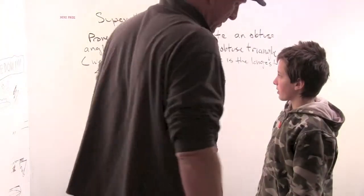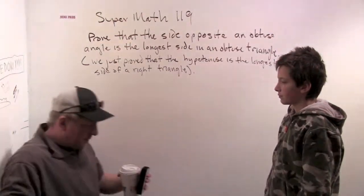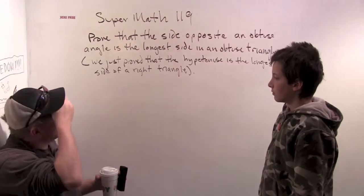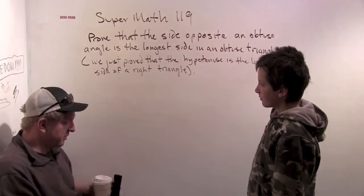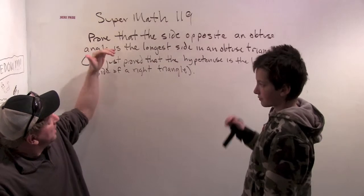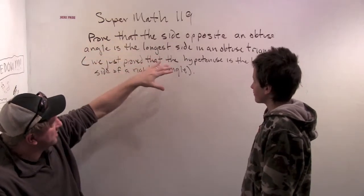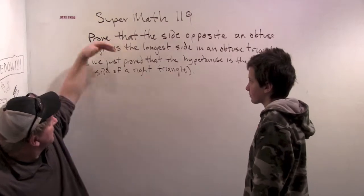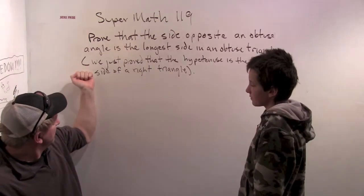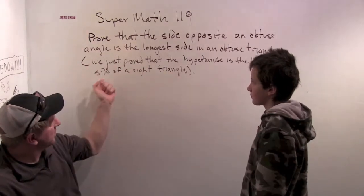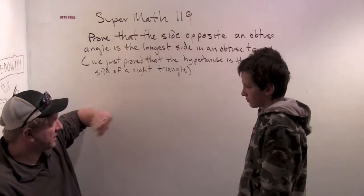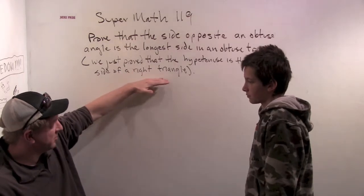Okay, good morning, welcome to SuperMath 119. We were just in the middle of talking about this problem and I thought it would make a great movie so we're kind of backing up. The problem is to prove that the side opposite an obtuse angle is the longest side of an obtuse triangle. That question followed one we proved earlier, that the hypotenuse is the largest side of a right triangle. What was the key idea in this proof, just real quick?